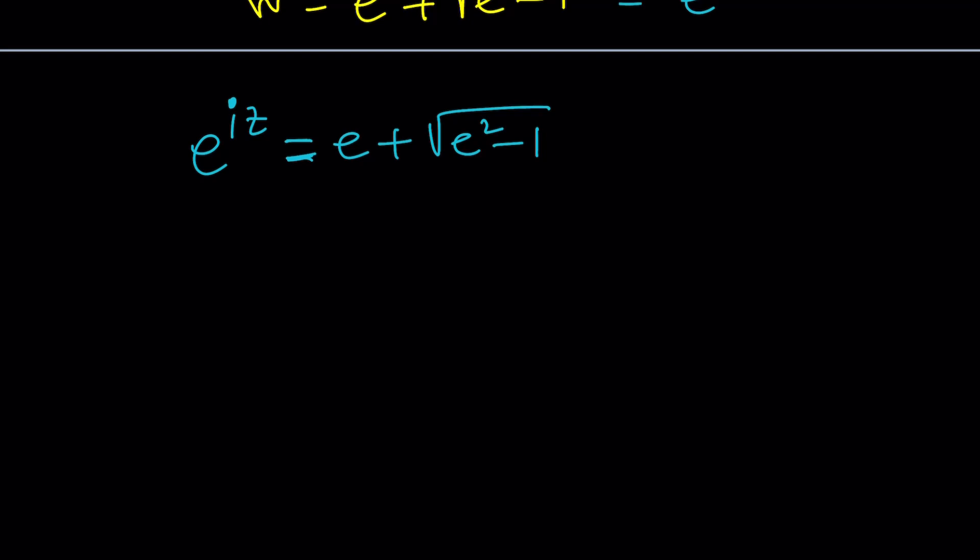So, how do you solve it? Well, we can try to write the right-hand side as e to the power something, and then we can just set the exponents equal to each other. Or you can do natural log on both sides. And that's going to give you iz. One of the things you can definitely do here is multiply the right-hand side by e to the power 2 pi ni. Because you can always do it. And then natural log both sides, which makes more sense.